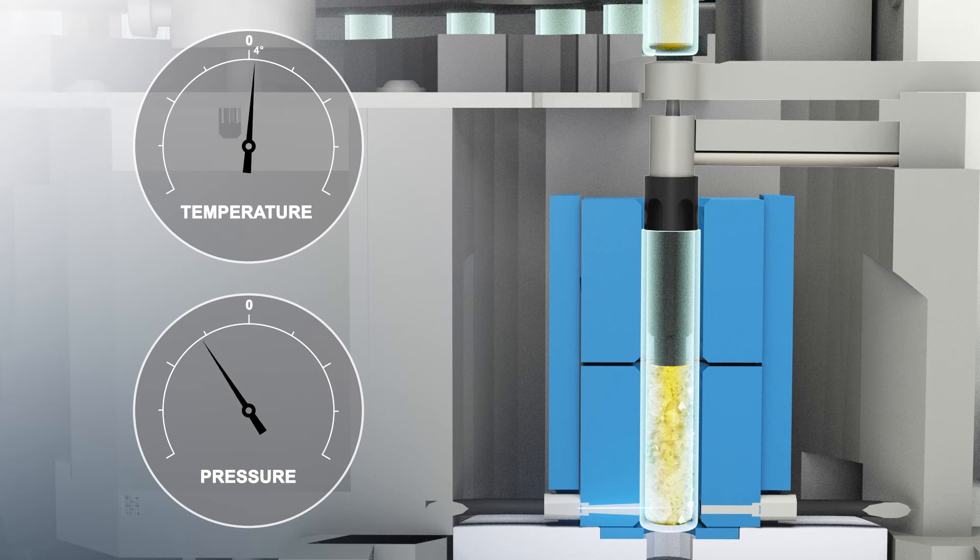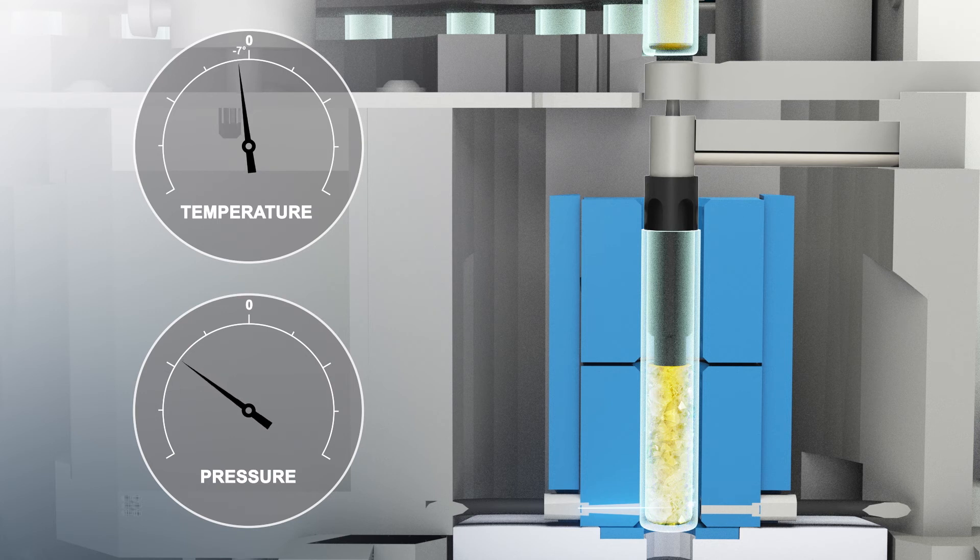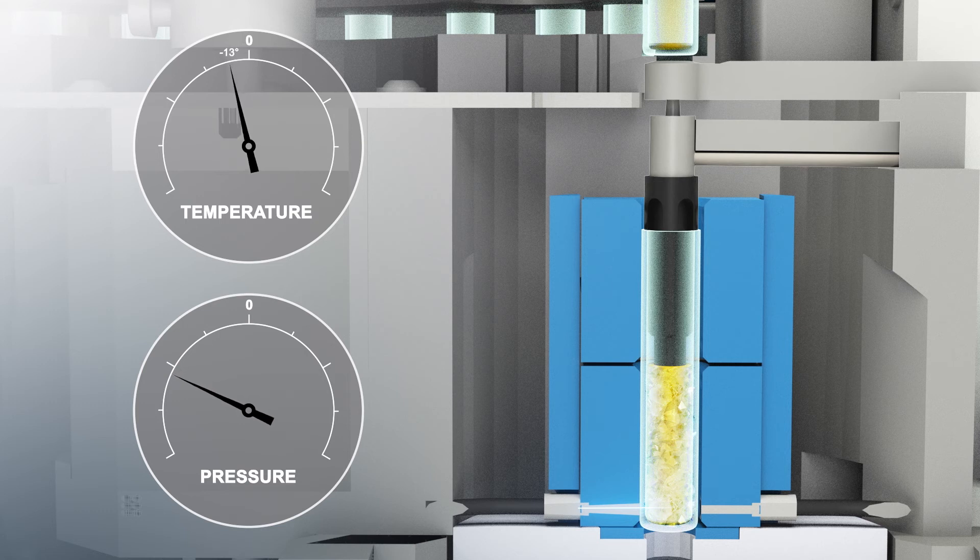As the sample cools, the volume of the sample decreases, creating a slight vacuum in the head space above the sample, which registers as a pressure decrease. The temperature at which the viscosity of the sample is too high and the volume of the sample no longer decreases is called the no flow point, which is also related to the pour point.